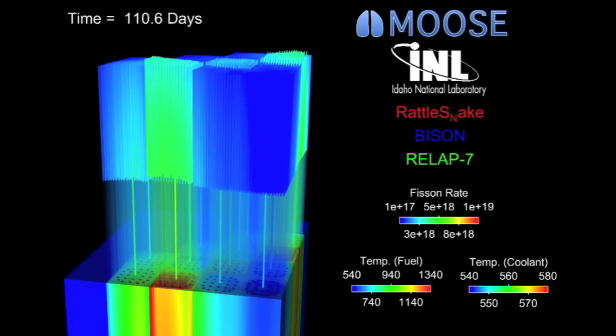Underneath that, through the cutaway, we can actually see the temperature of the coolant itself, the water as it flows through the reactor. Then on the bottom here, we can actually see the neutronics, the physics of the fissioning process itself.